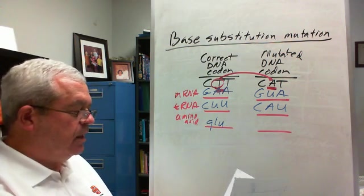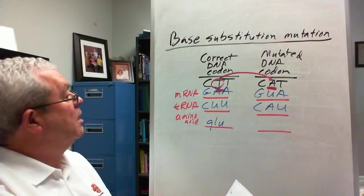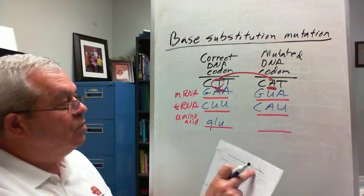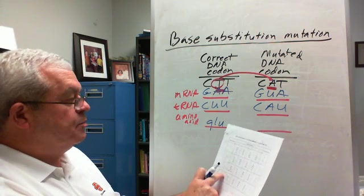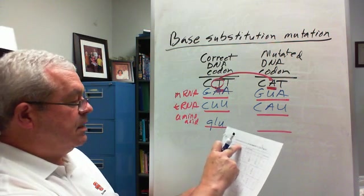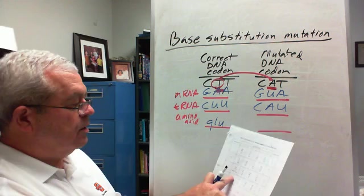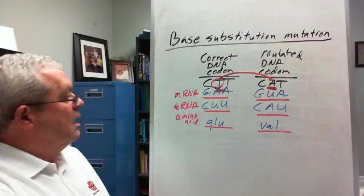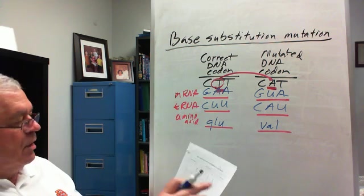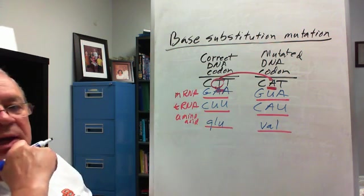And then, as far as the mutated codon goes, the tRNA anticodon is CAU. So I go to first base C, second base A, and that one doesn't matter what the third base is, you're going to get a val, no matter what the third base is.